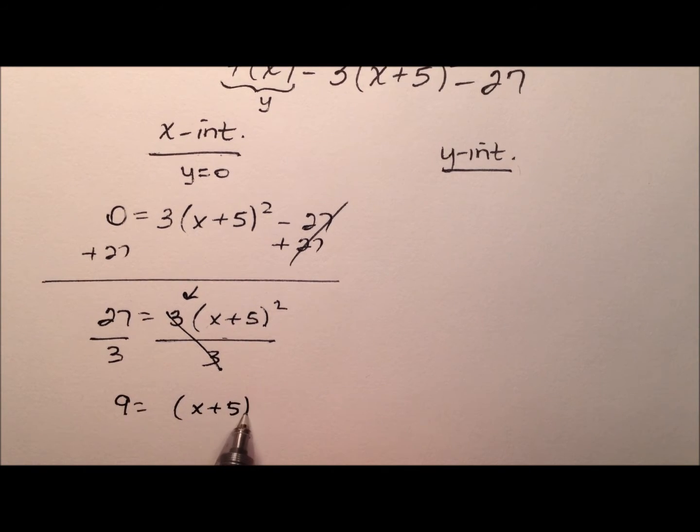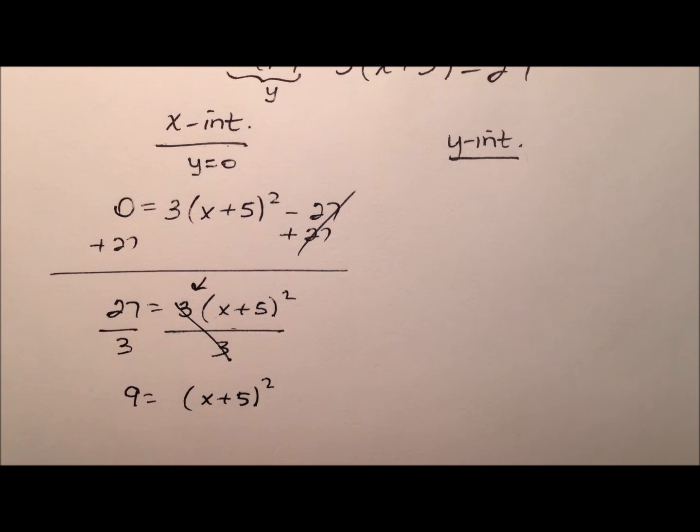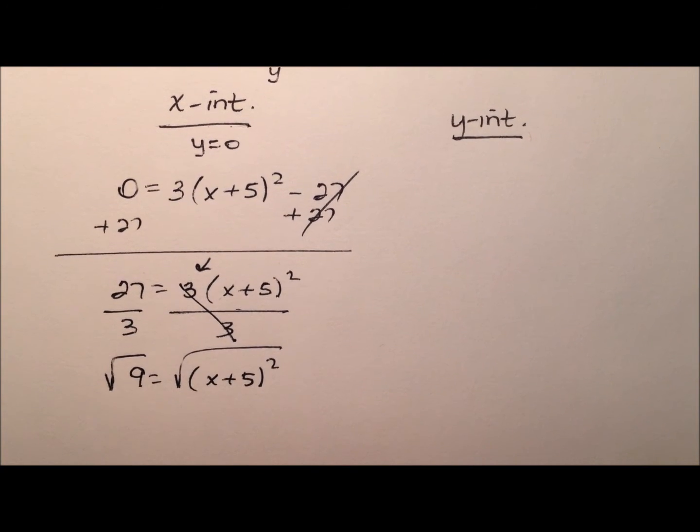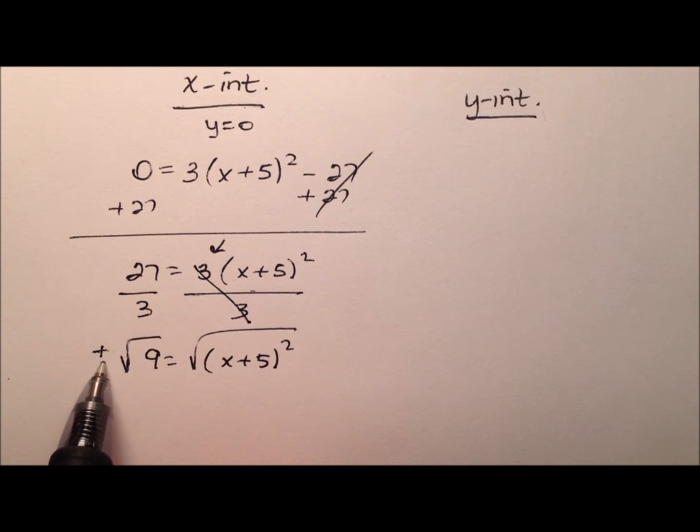And so this (x + 5)² is on the right, and our 9 is on the left. So let's go ahead and do the square root of both sides. When we do so, remember we will need to add this plus or minus with this non-perfect square side.